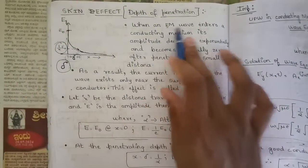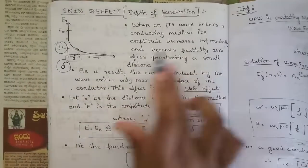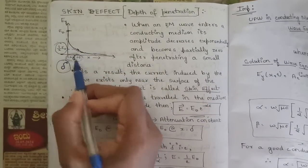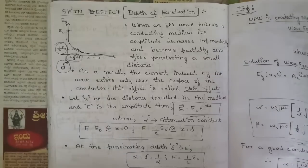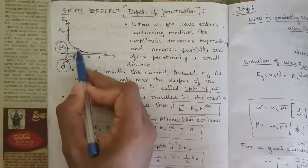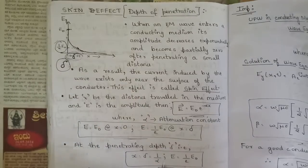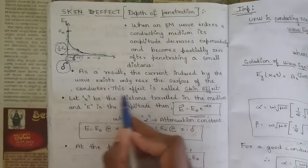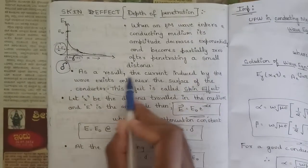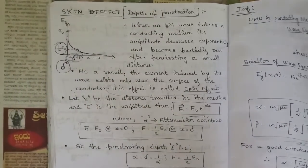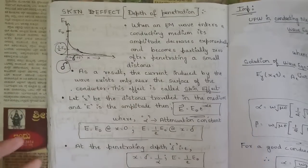When an EM wave enters a conducting medium, its amplitude decreases exponentially and becomes partially zero after penetrating a small distance. This small distance is called the depth of penetration. As a result, the current induced by the wave exists only near the surface of the conductor — not through the whole conductor — and this effect is called the skin effect.